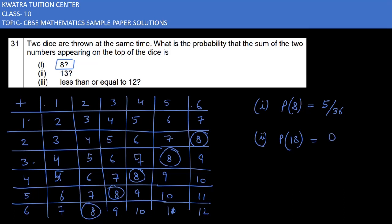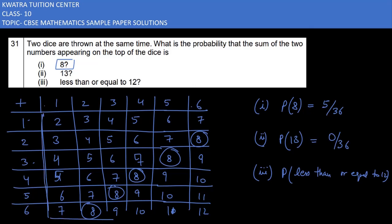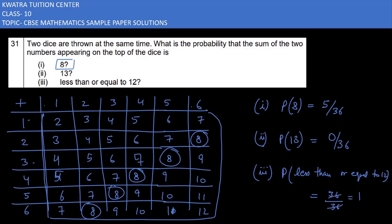If you see the probability of getting a sum of 13, it is not possible on two dice, so it will be 0 over 36. Next, the probability of getting a sum less than or equal to 12 — since all outcomes give sums of 12 or below, all 36 outcomes are favorable, so it is 36 over 36, which equals 1.